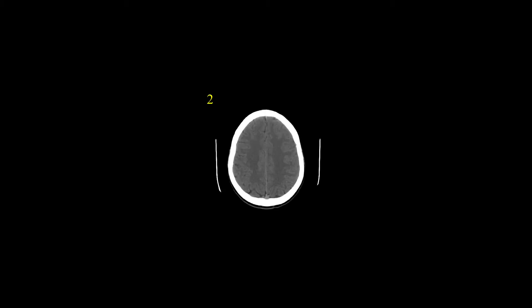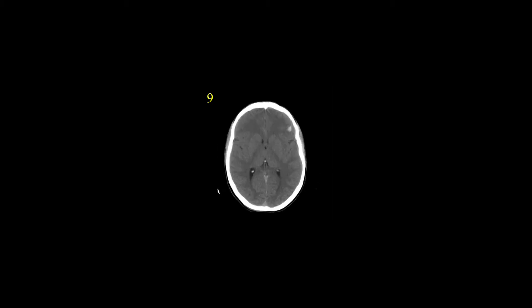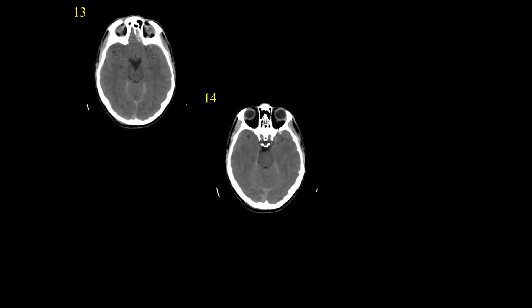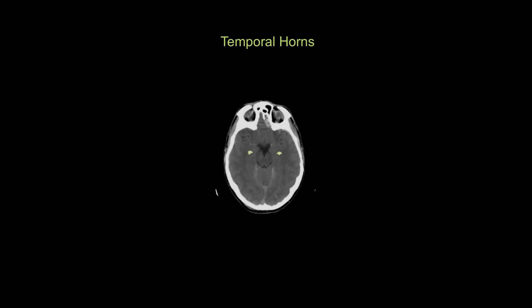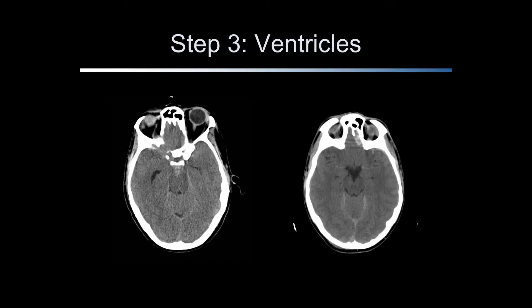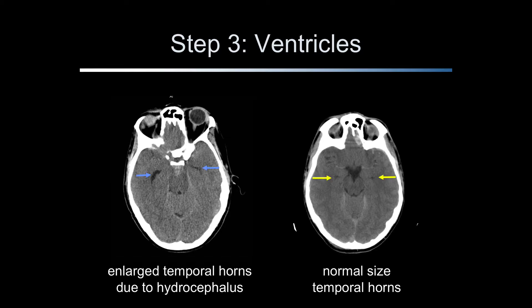As you continue to scroll inferiorly, the temporal horns, or temporal tips, of the lateral ventricles are seen at or near the level of the quadrigeminal cistern. These are typically L-shaped structures and may not be seen, especially in older generation scanners. The temporal horns are sensitive for the detection of hydrocephalus. If they are prominent, consider hydrocephalus as a diagnosis. The temporal horns indicated by the yellow arrows on the right CT are normal in size, while the temporal horns indicated by the blue arrows on the left CT are enlarged from developing hydrocephalus.